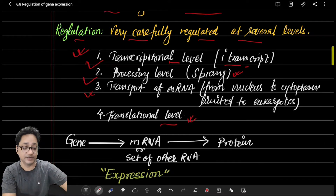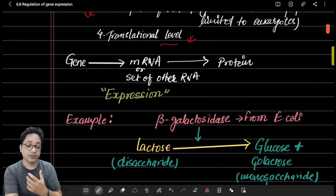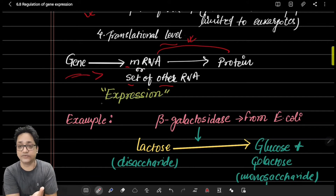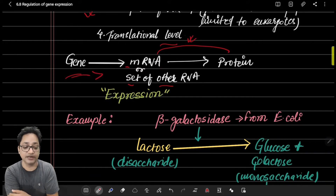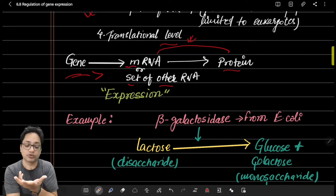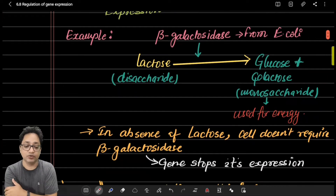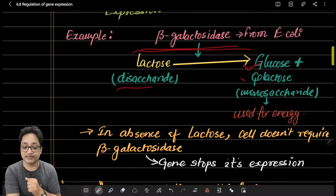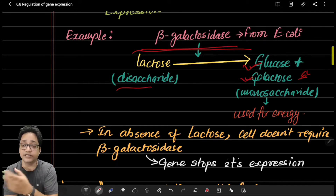Now, what does expression mean? Genes need to synthesize mRNA or a set of other RNAs, and ultimately protein. Whether genes are synthesizing a set of RNA or getting expressed into protein through mRNA, both are called expression. For example, in E. coli, beta-galactosidase is a key enzyme responsible for the metabolism of lactose. It breaks the disaccharide lactose into two monosaccharides — glucose and galactose — which are six-carbon molecules responsible for energy production.